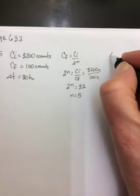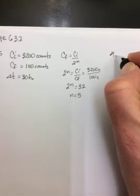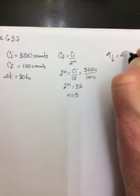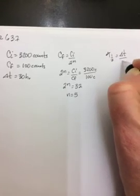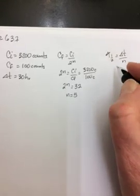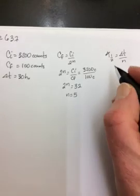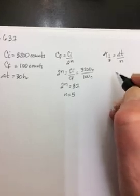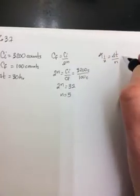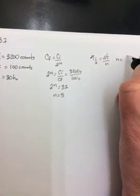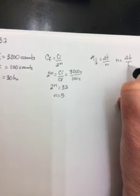Okay, if N equals 5, then we know T one-half is equal to delta T over N. Sorry, I was just trying to find where I actually did this. Maybe N is equal to delta T over T one-half.